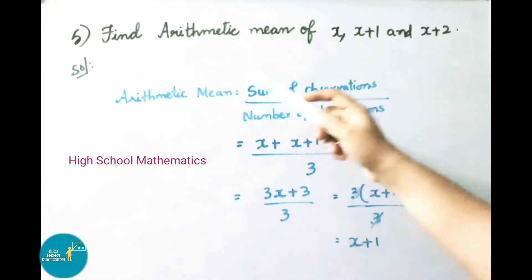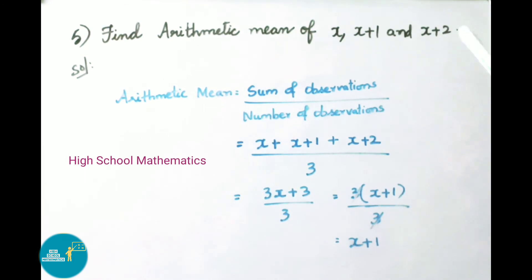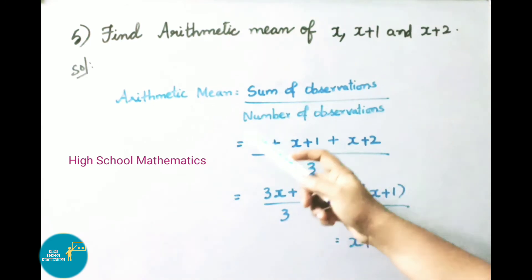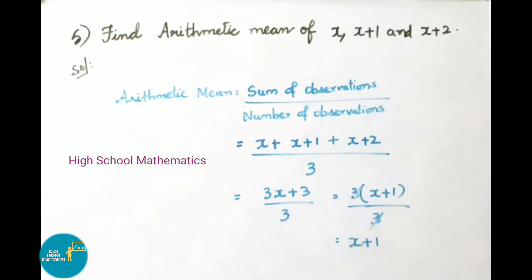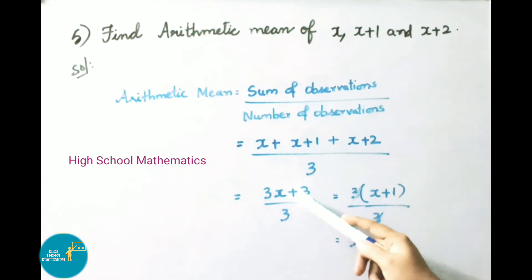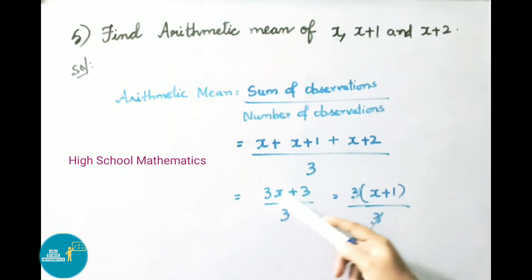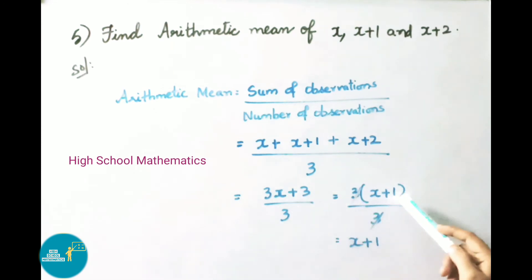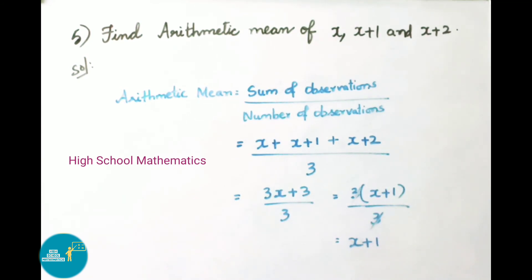Question 5: Find arithmetic mean of x, x+1, and x+2. Arithmetic mean = (x + x+1 + x+2) / 3 = (3x + 3) / 3 = 3(x+1) / 3 = x + 1. Therefore, the arithmetic mean is x + 1.